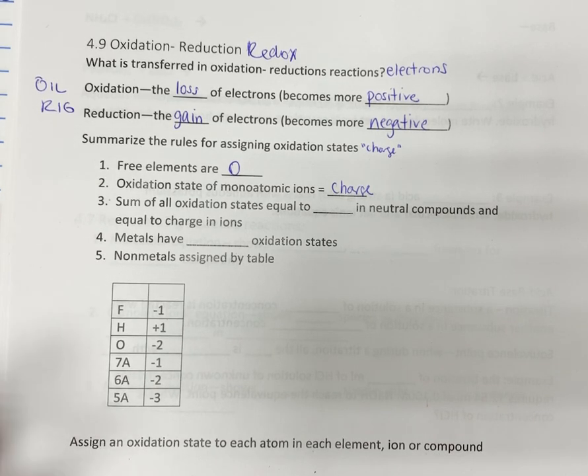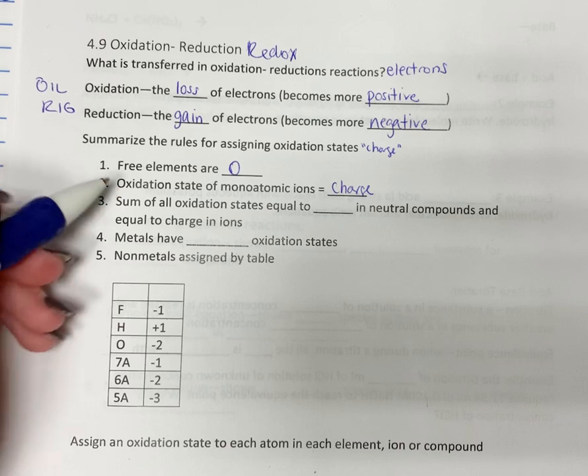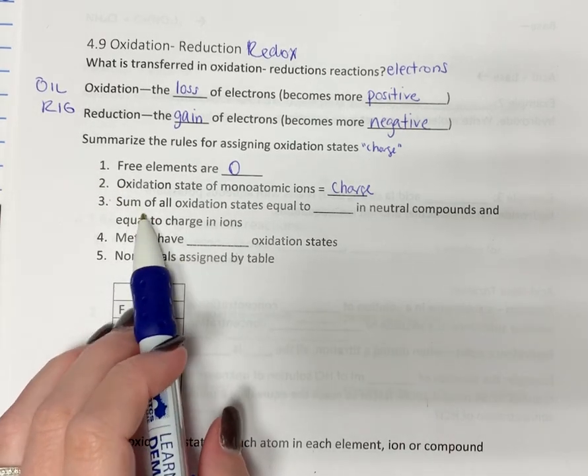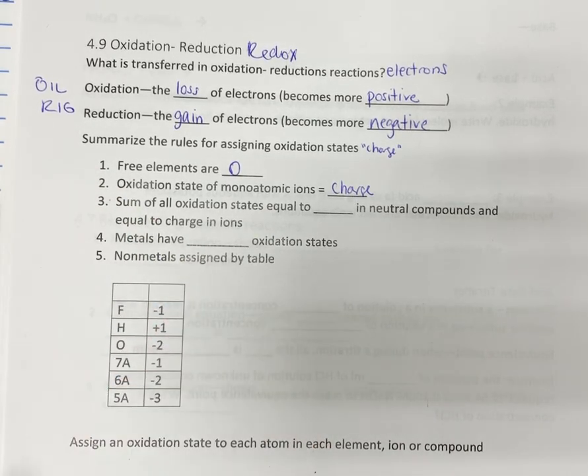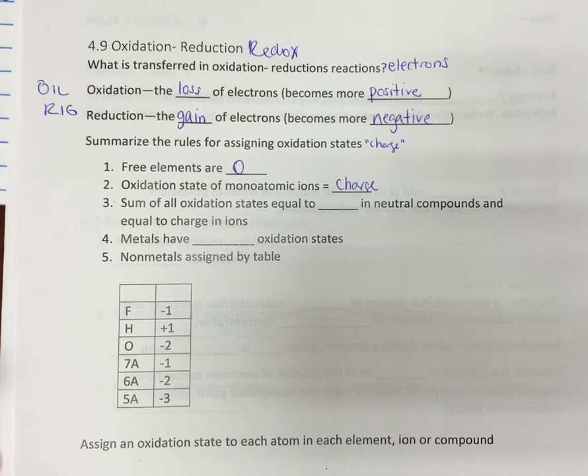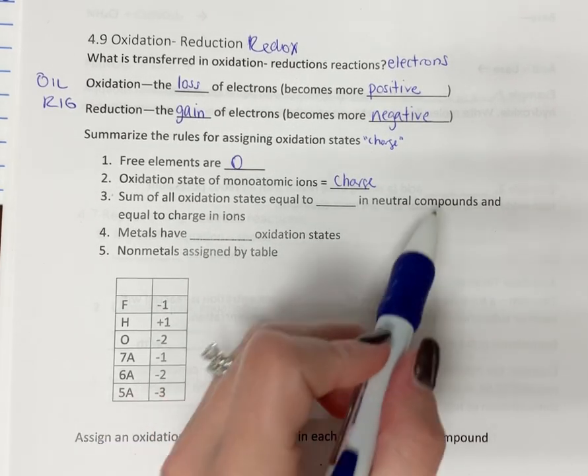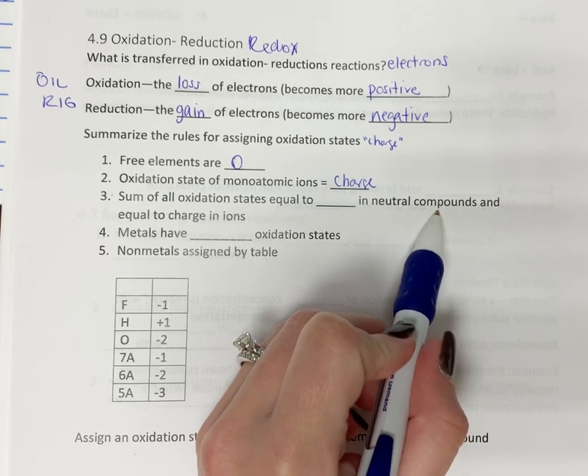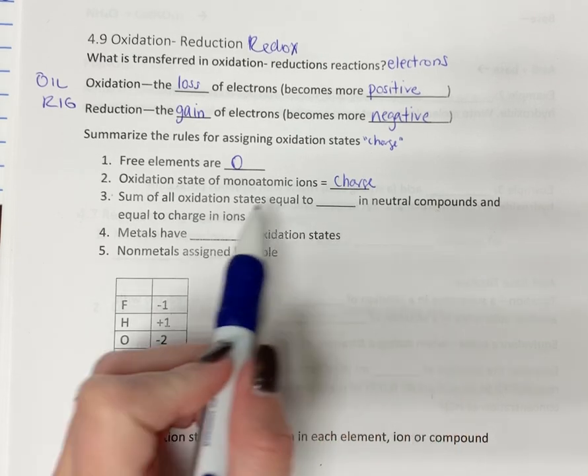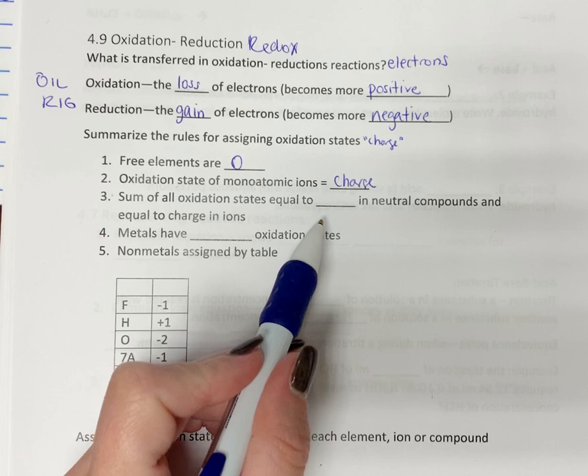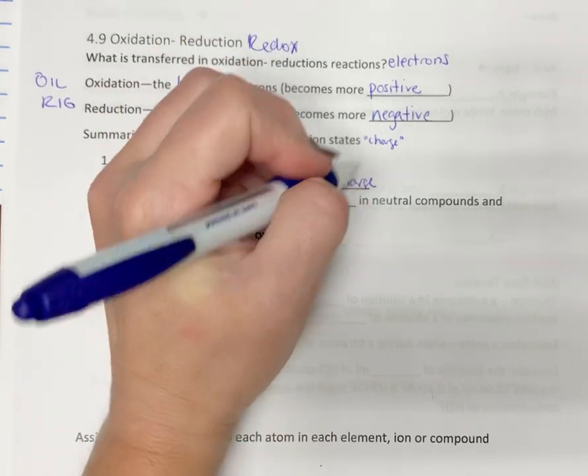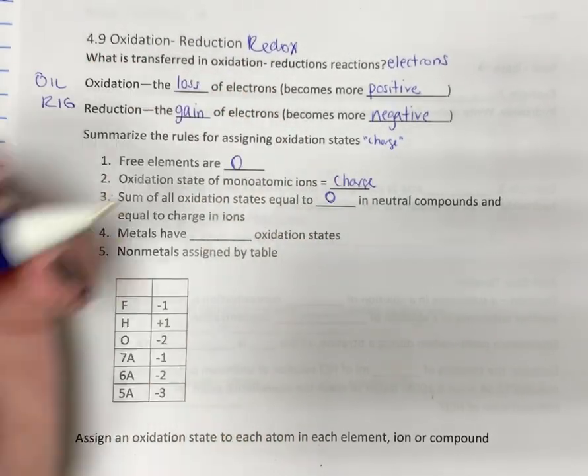Now, what happens when we don't have just an element or an ion? What happens if we have a compound or something else? Well, similarly to when we did ionic compounds, if you have a neutral compound, we did charge balance. So all of them add up to equal zero in a neutral compound.